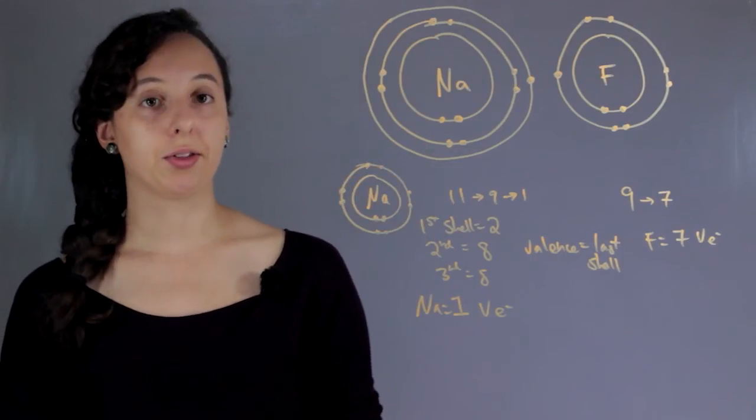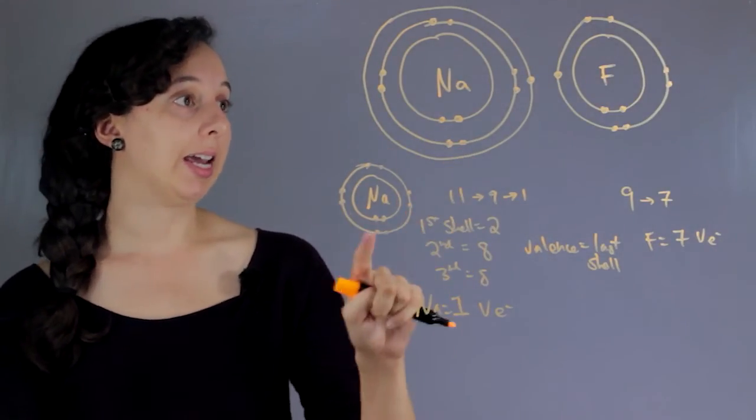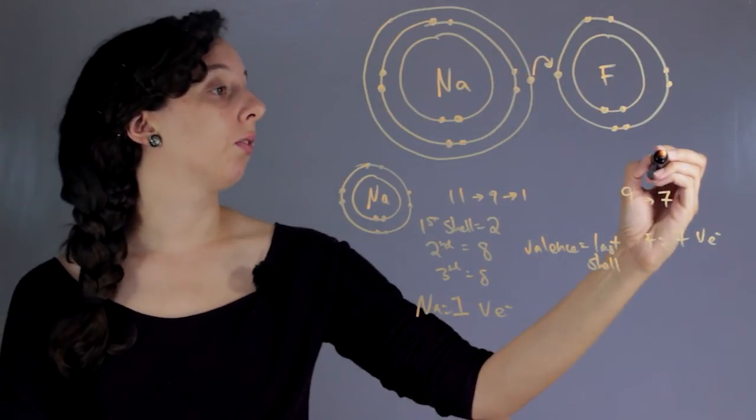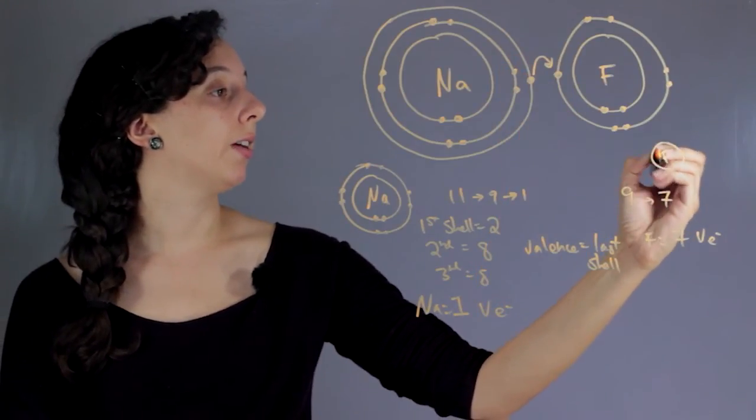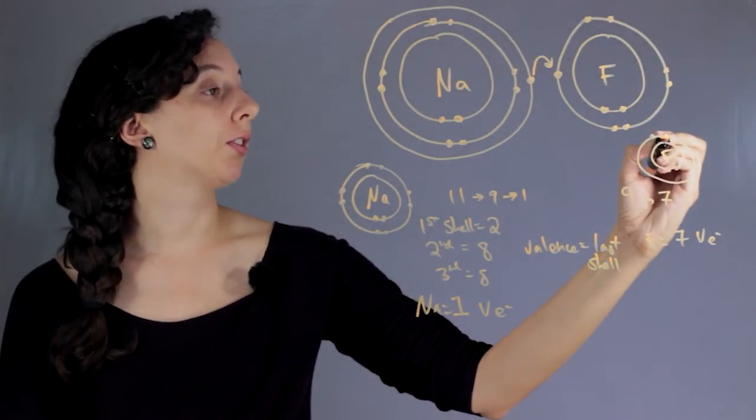And then it wouldn't have a third shell, or it would be there, but it's empty, so we don't draw it. So it has 8 now if it gives this one to there. And then fluorine would have its regular 2. And now its second shell is completely full.